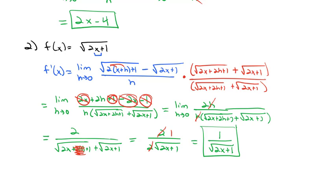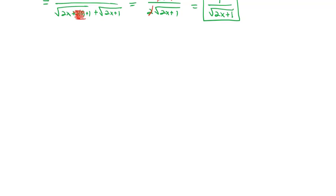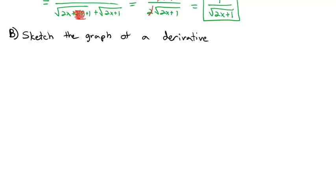Now that we know how to calculate derivatives, I want to talk about how the derivative is connected to the graph of the function — we're going to sketch a graph of a derivative. Remember, the derivative describes the slope, or the rate of change, of the tangent line. The derivative is the slope of the tangent line.